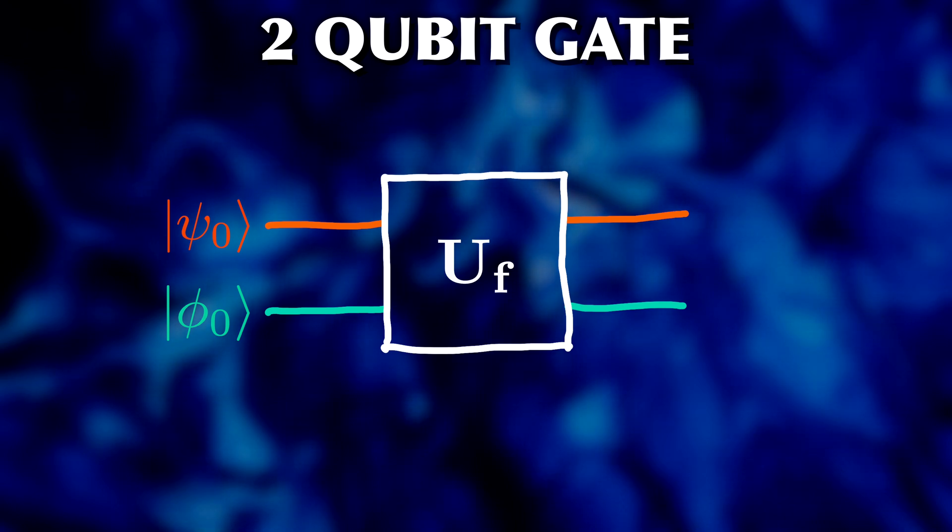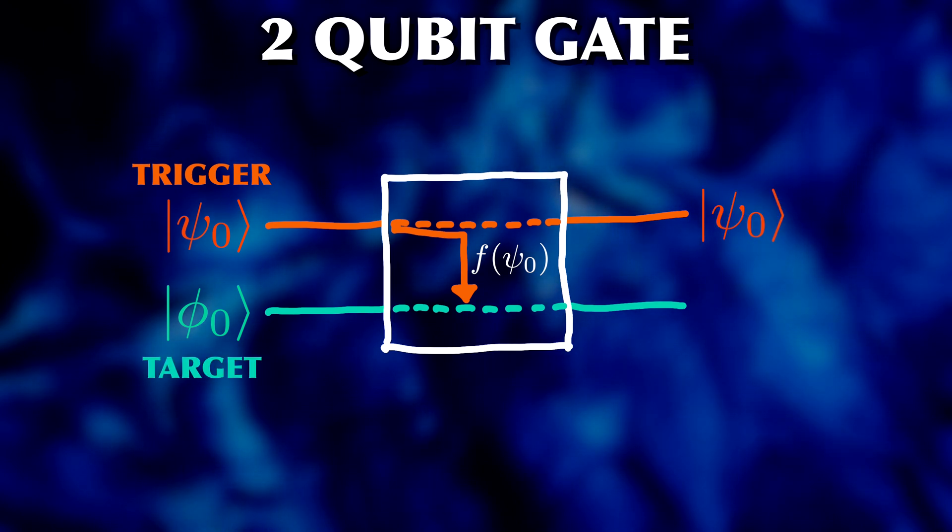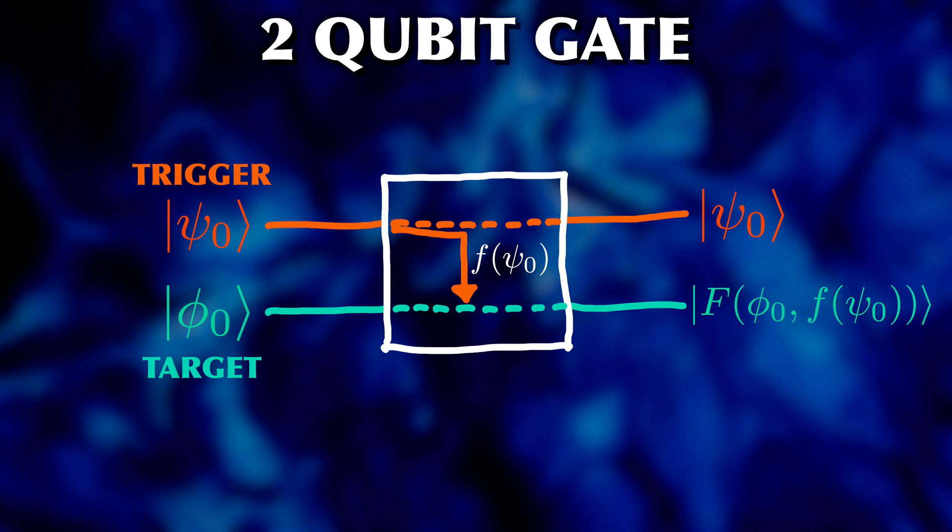One qubit acts as the trigger qubit, so it only influences what the function does, but is itself not affected. The second or target qubit is changed and then exits with a modified state that depends on the function and the trigger qubit.